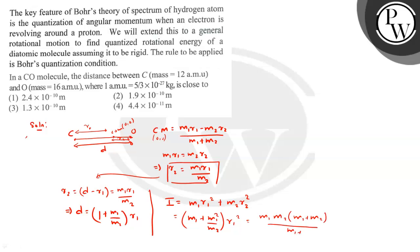This becomes (m1·m2)/(m1 + m2) times d². So here after solving, 1.87×10⁻⁴⁶ equals (12 × 16)/28 amu.